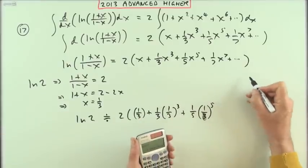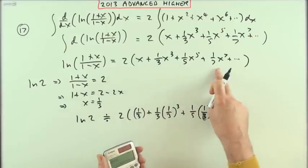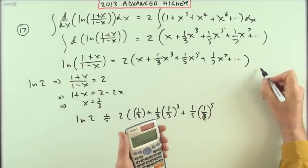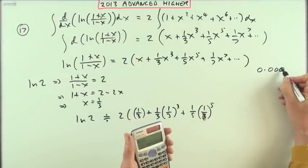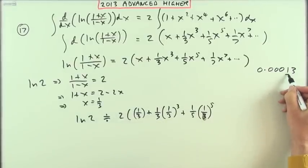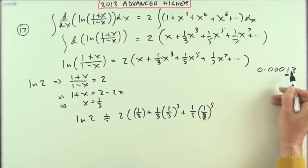For that term, doubling it of course I got 0.00013. It does enter in the fourth decimal place, which could by addition and carry influence the third decimal place.